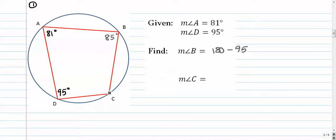Same thing for angle C. Angle C is 180 minus angle A. Those are opposites, and therefore they are supplements. So it's 180 minus 81 or 99 degrees.